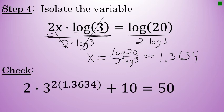I can check my answer by substituting 1.3634 back into the original equation. Realize that this will not check out exactly because we rounded our solution off to 4 decimal places. However, the value of 2 times 3 to the power of 2 times our solution 1.3634 plus 10 will be relatively close to 50.